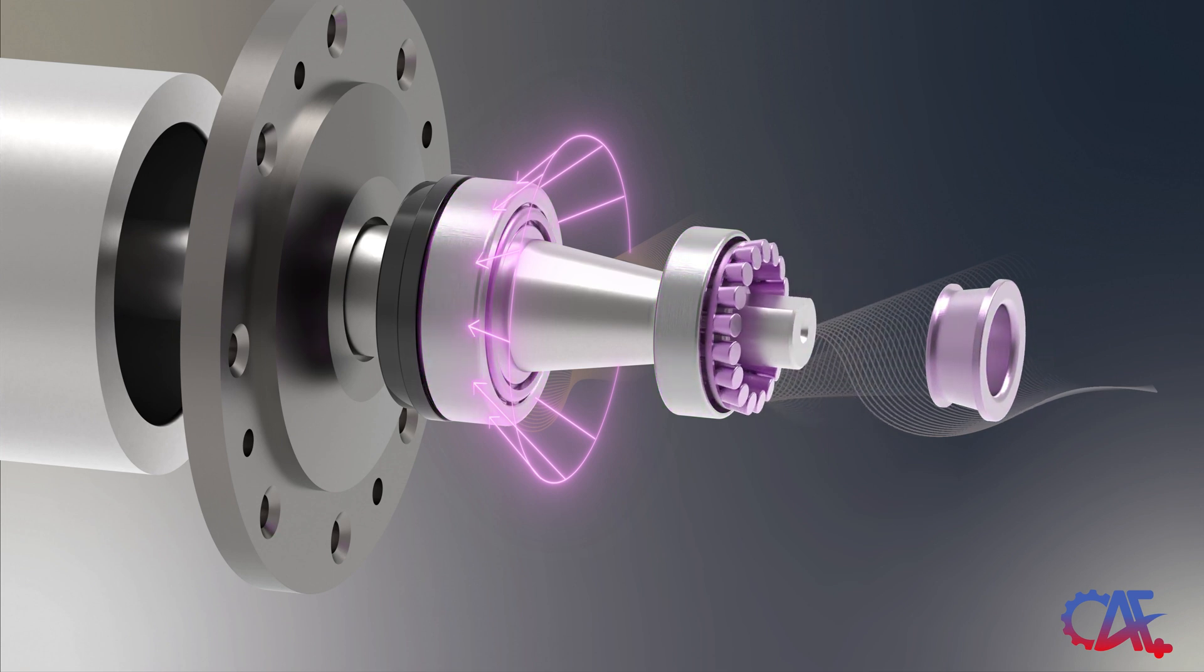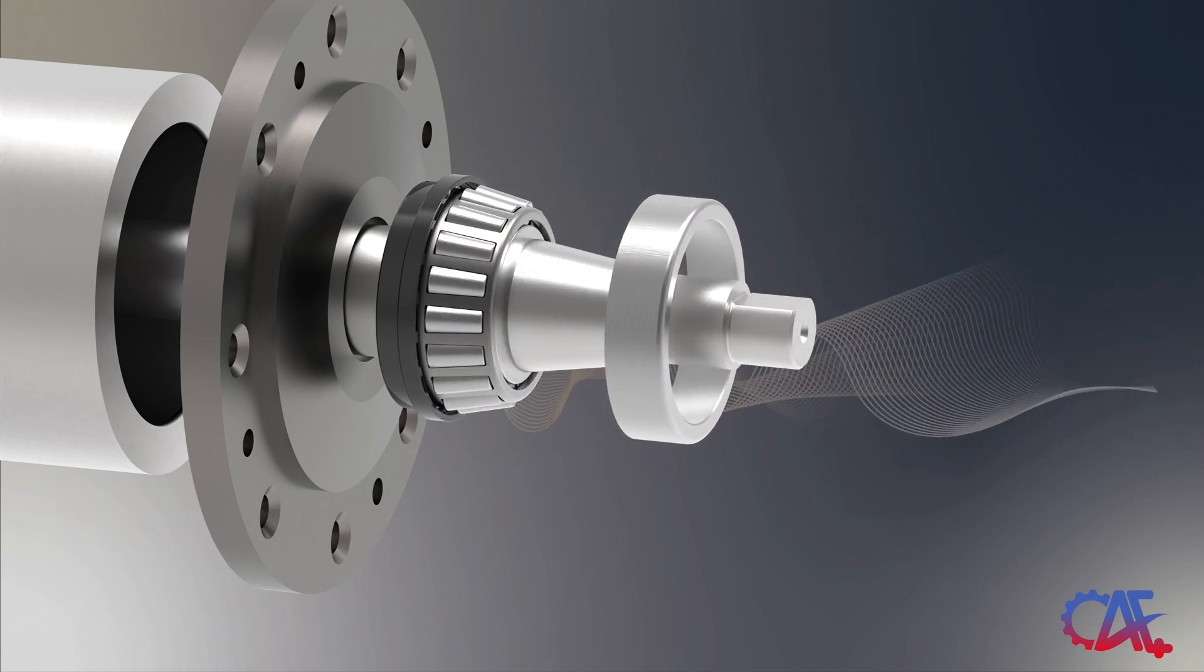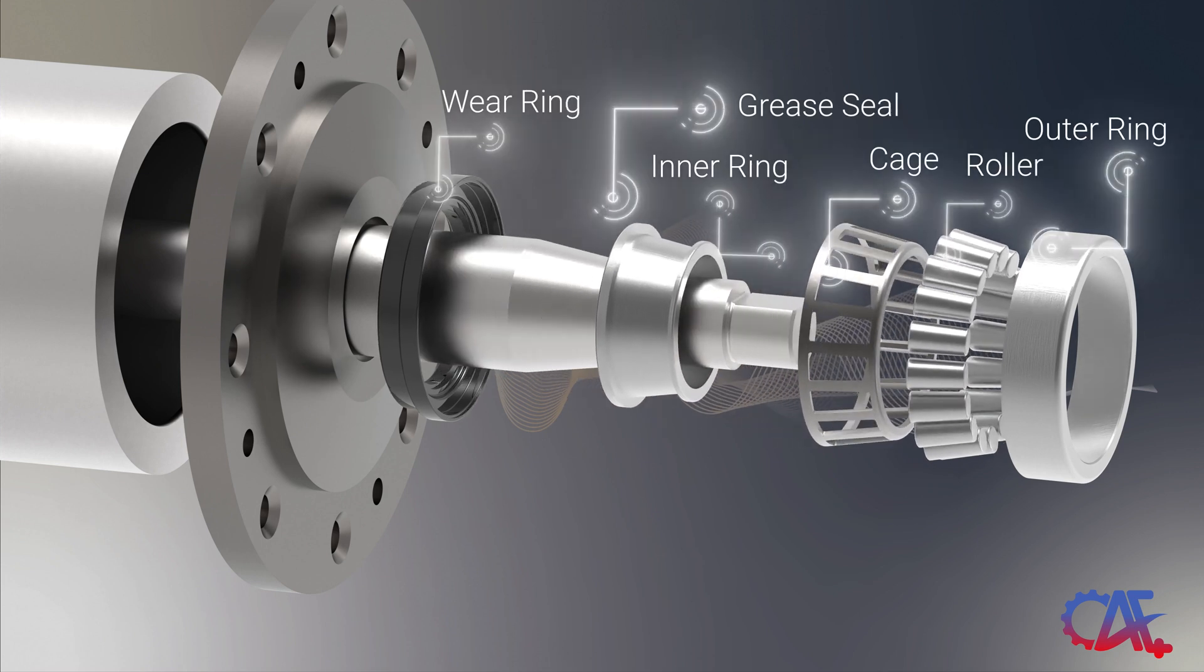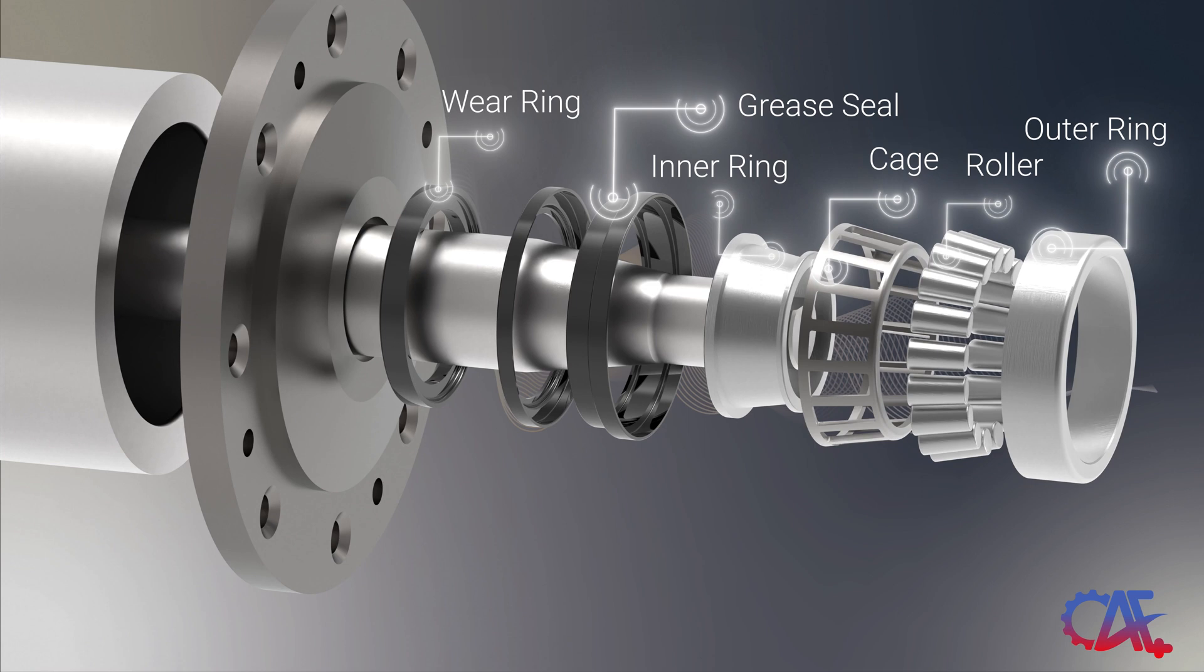Let's once again disassemble the tapered roller bearing to examine its components. Tapered roller bearings consist of two main parts, the cone and the cup. The cone houses the tapered rollers, a cage, and an inner ring, whereas the cup serves as the outer ring. In wheel hub applications, the bearing is complemented with a grease seal and a wear ring, as illustrated here.